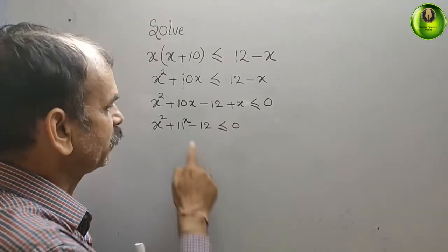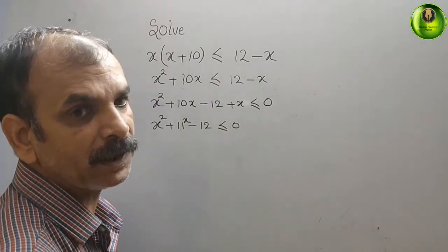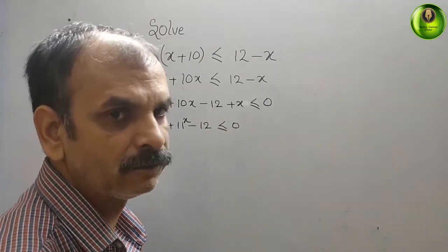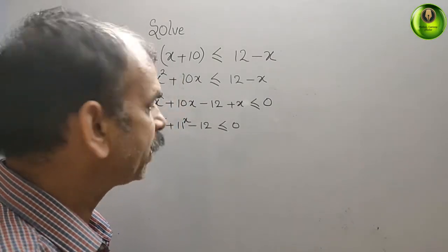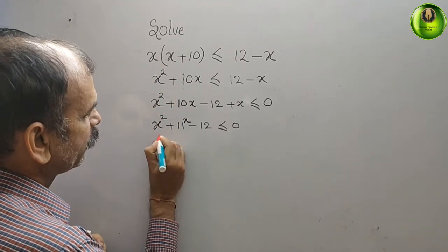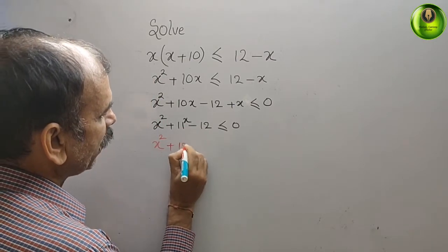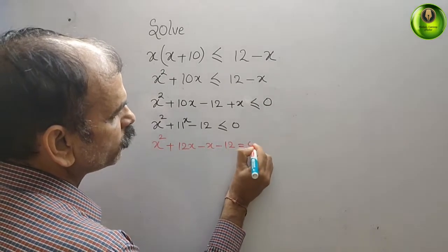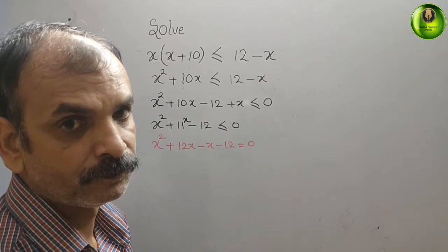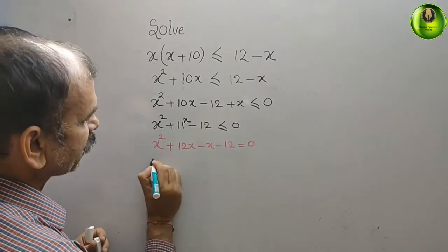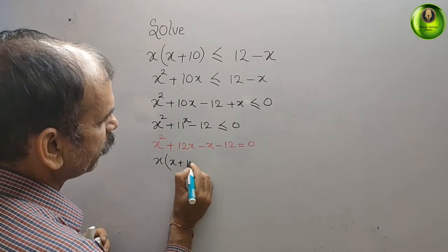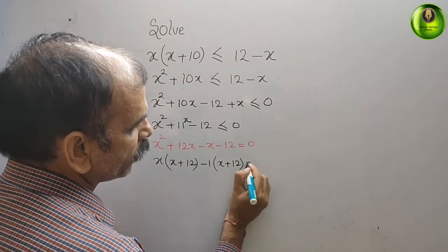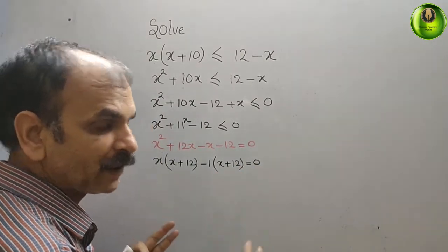Now use middle term splitting. We know 12 × 1 = 12 and 12 - 1 = 11, so split 11x into +12x and -x. You get x² + 12x - x - 12 = 0. Taking x common gives x(x+12), and taking -1 common gives -1(x+12).